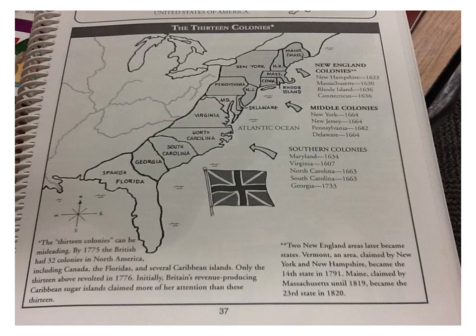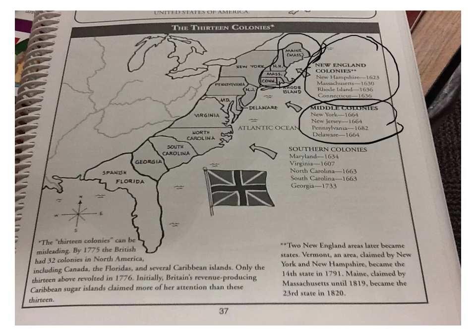Here we have the 13 colonies. I see the New England colonies listed as New Hampshire, Massachusetts, Rhode Island, and Connecticut. Notice that Maine is not actually its own colony — it's part of Massachusetts. Then the middle colonies are listed as New York, New Jersey, Pennsylvania, and Delaware.